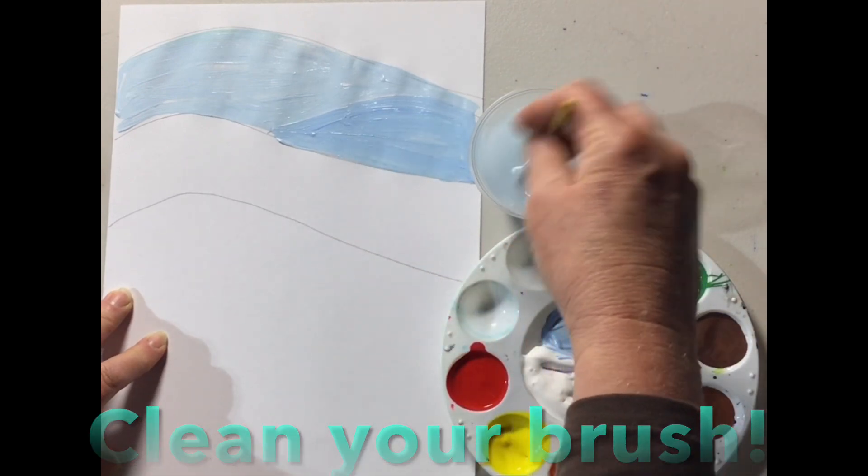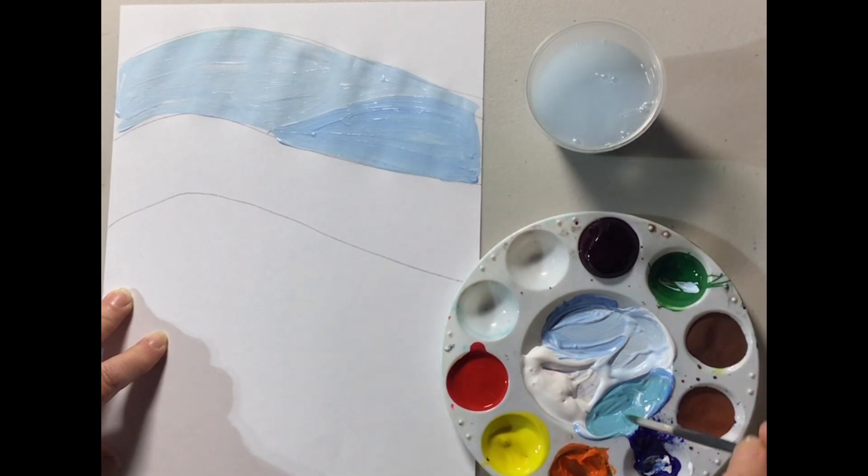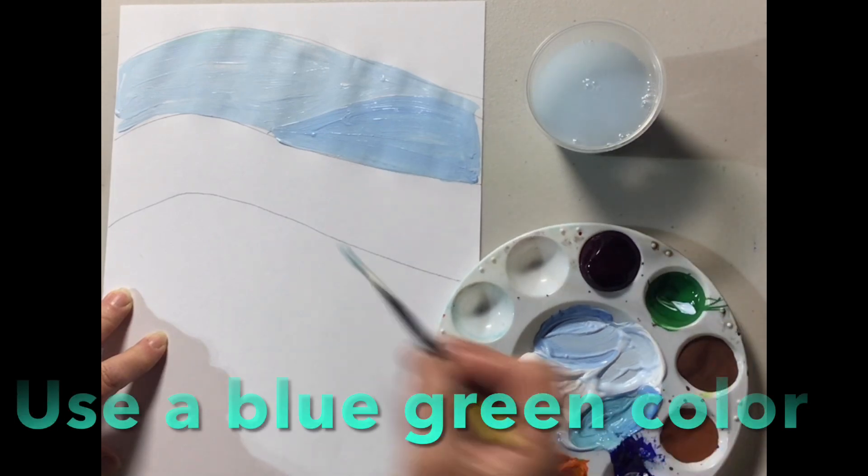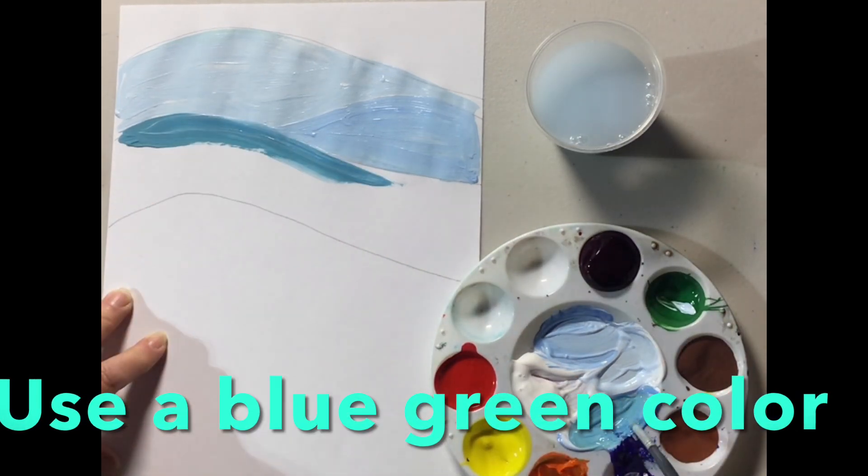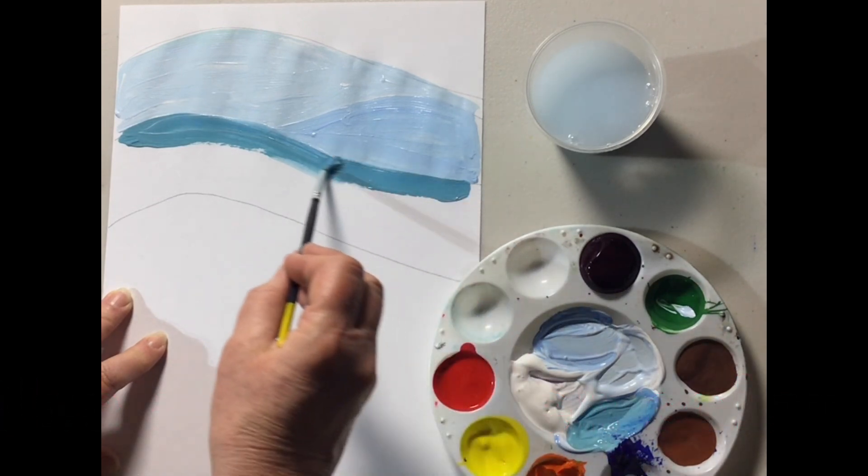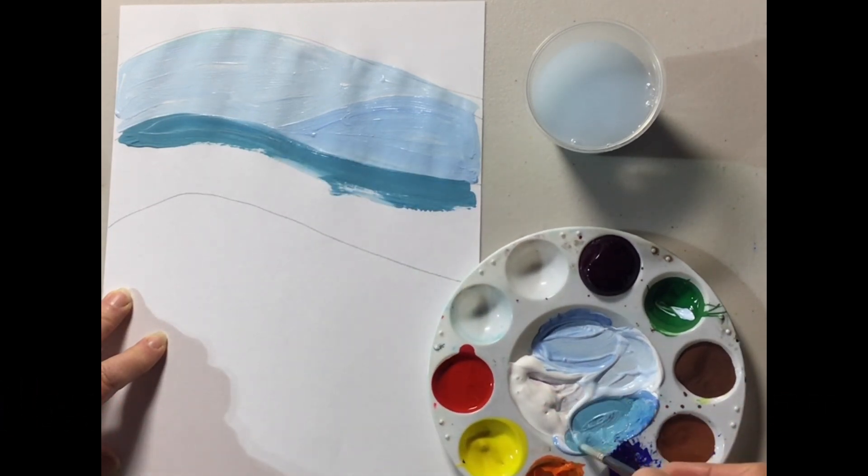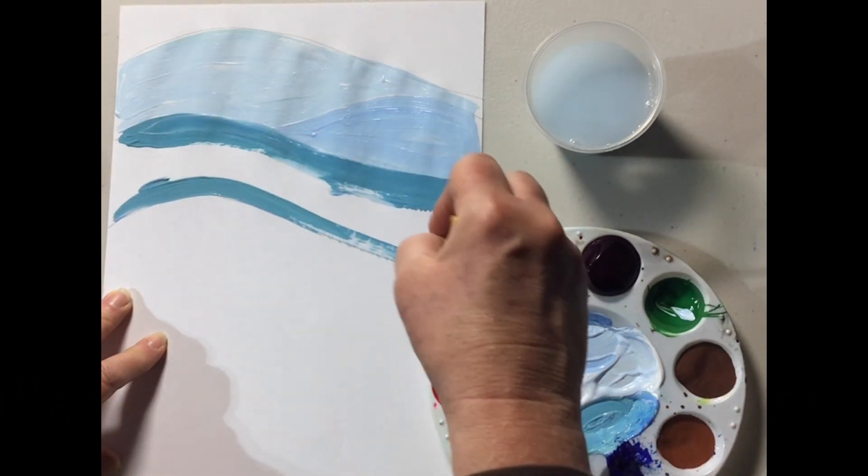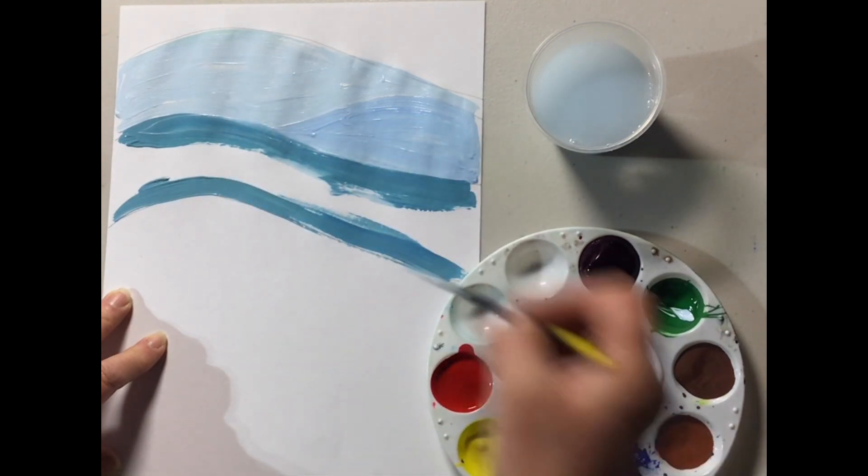Clean your brush. Let's get the next color. This one I add a little bit of blue to it. It's kind of like a teal, a blue-green color. Let's go ahead and stroke that on. The mountains will look like they're slowly coming towards us.